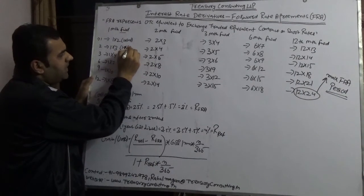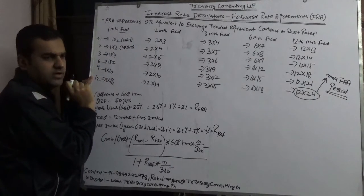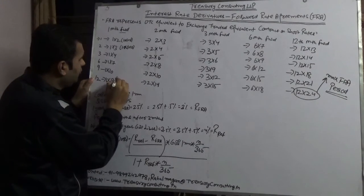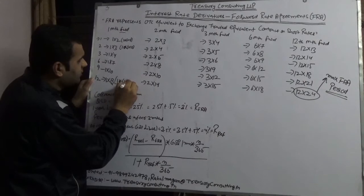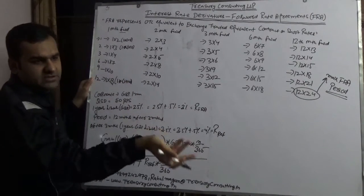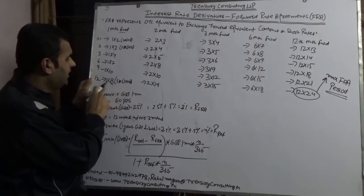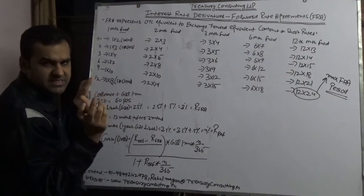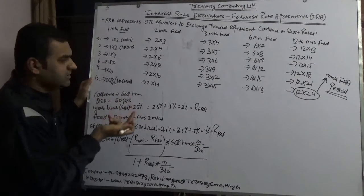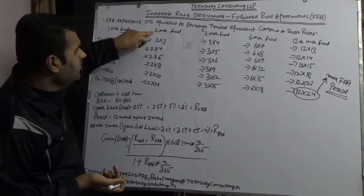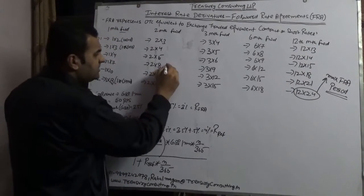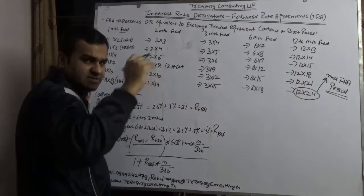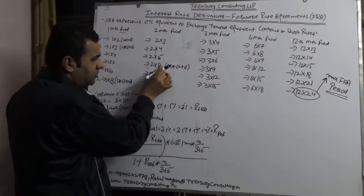One-month forward for twelve months equals 1x13 (1 + 12 = 13). We always write 1x13 rather than 1x(1+12) for simplicity. Similarly, two-months forward for six months is 2x8 (2 + 6 = 8).